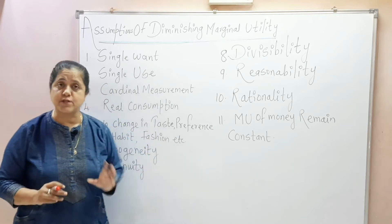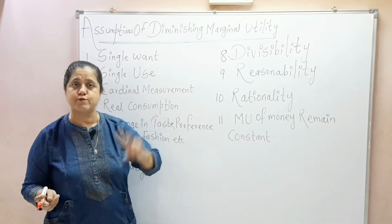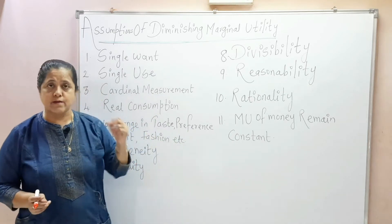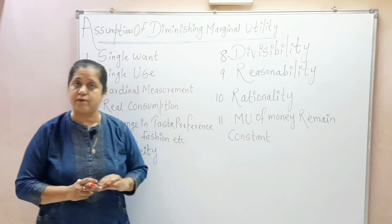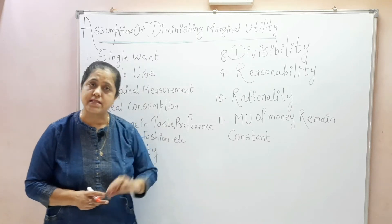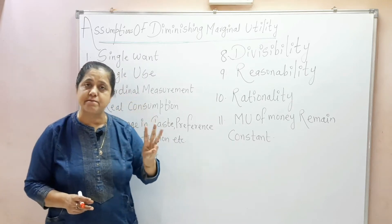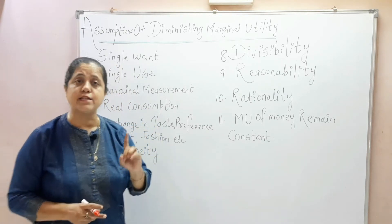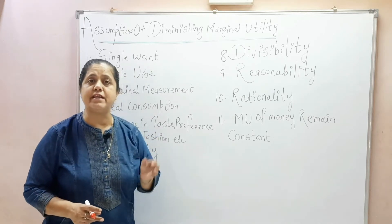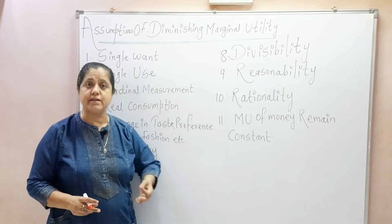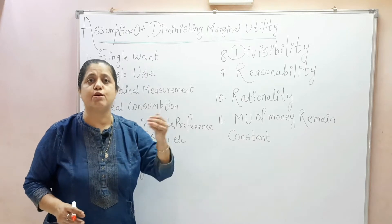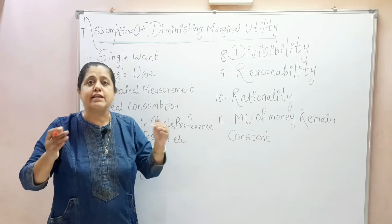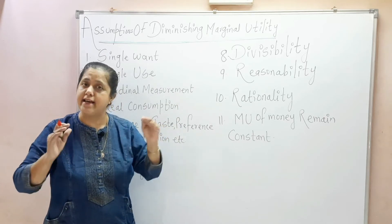He tried to explain the consumer behavior with the help of two important concepts: marginal utility and total utility. Second part is a statement of law. Statement of law mein hamni discuss kiya three different statements given by Marshall. First statement mein hamni liya ki other things being constant, the additional benefit which a person derives with every increase in the stock of commodity will go on diminishing with every given increase in the stock that he already has.